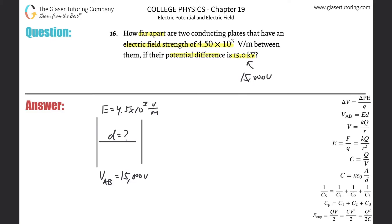You've got two conducting plates—call it plate A here and plate B. They have an electric field strength between them of 4.5 times 10 to the third volts per meter. Remember, the electric field strength between two parallel plates is going to be constant everywhere between them. The voltage between the two plates they told us was 15,000 volts, and we've got to find the distance.